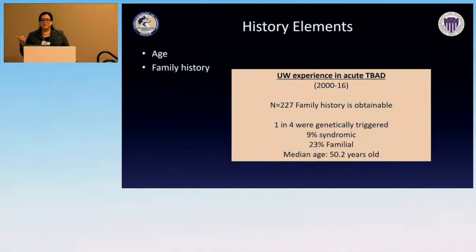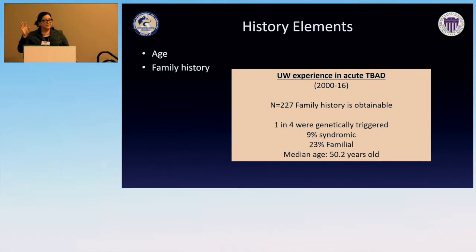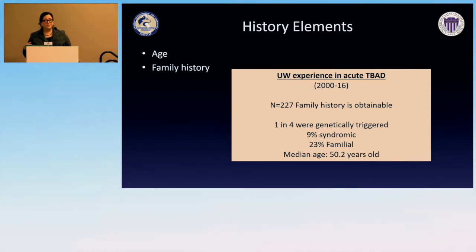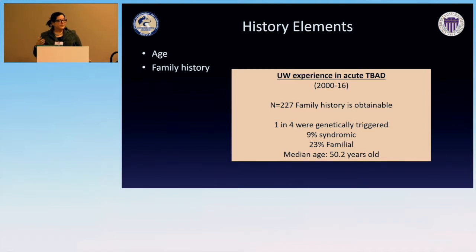The big triggers are age and family history. Type B dissections can present fairly young, and if they are young, it really has to trigger attention that this may be genetically triggered rather than the typical 70-year-old presentation. If they're in extremis we can't always get family history, but if they're able to tell us, that's helpful information up front.